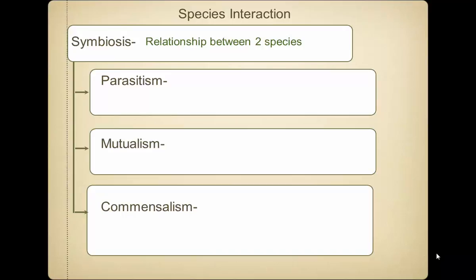We break symbiosis into three categories: parasitism, mutualism, and commensalism. I'm sure you've heard of one of these. Most have probably heard of the first one — parasitism. What is a parasite?